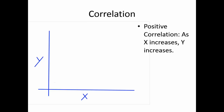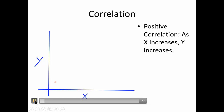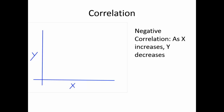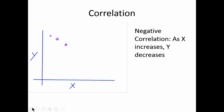A positive correlation looks like going up a flight of steps — as X increases, Y increases. One step forward on X is one step forward on Y. In a negative correlation, as X increases, Y decreases, so one step forward on X is one step down on Y.